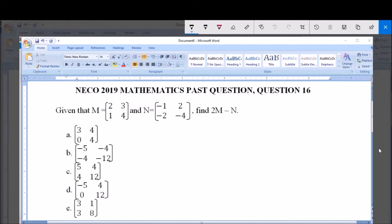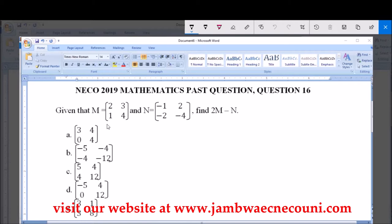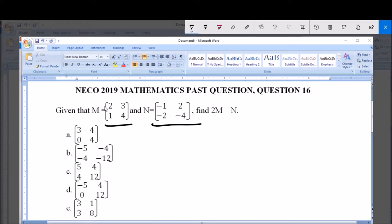So, we're given this matrix M: 2, 1, 3, 4, and matrix N, a 2x2 matrix: minus 1, minus 2, 2, minus 4. Now, we have to find 2 times this M, that's 2M, minus N.